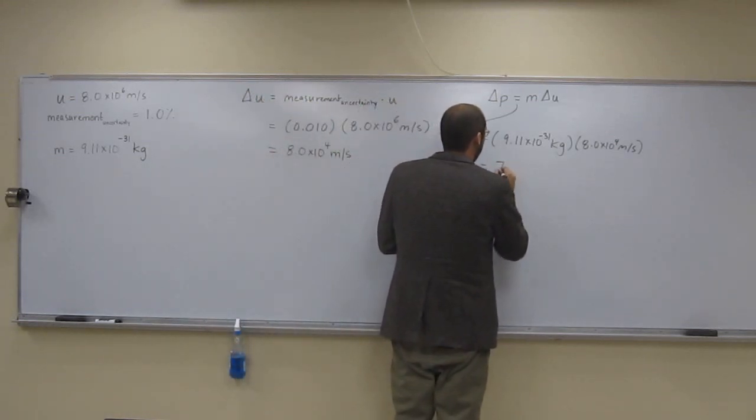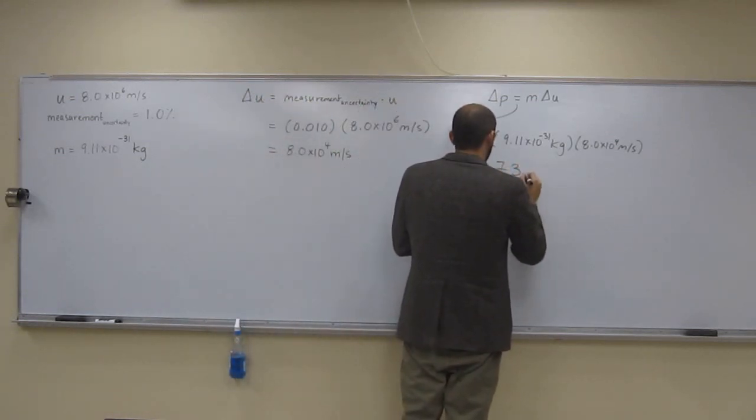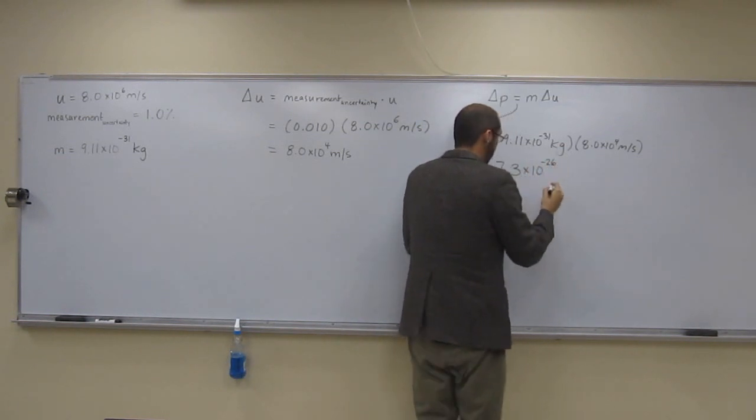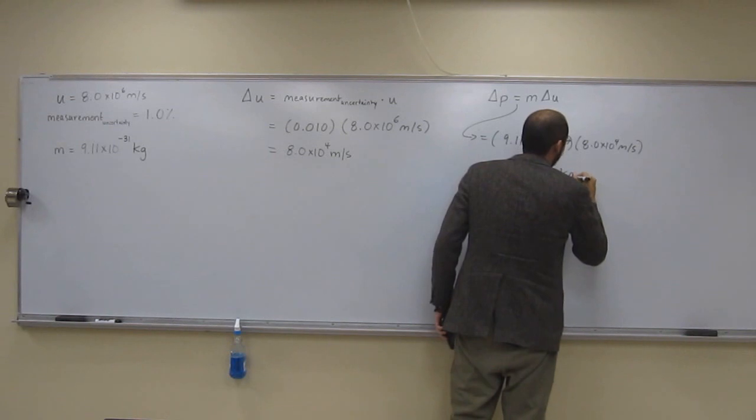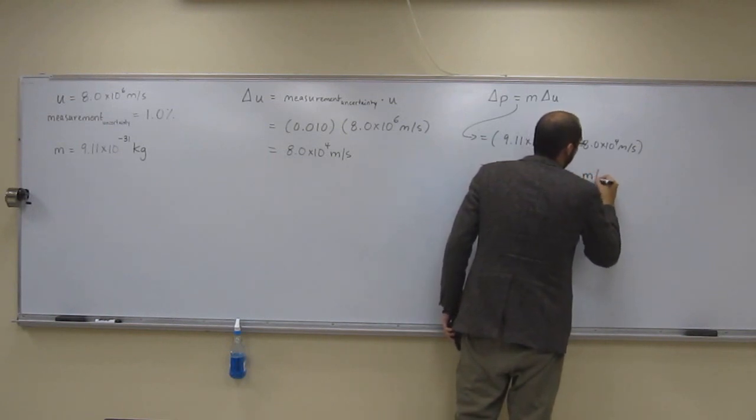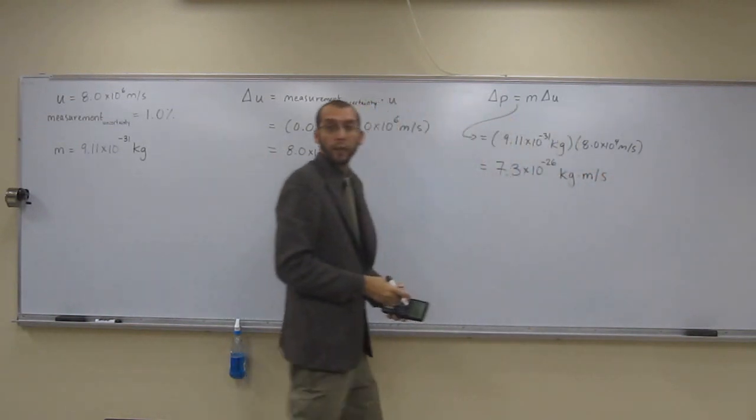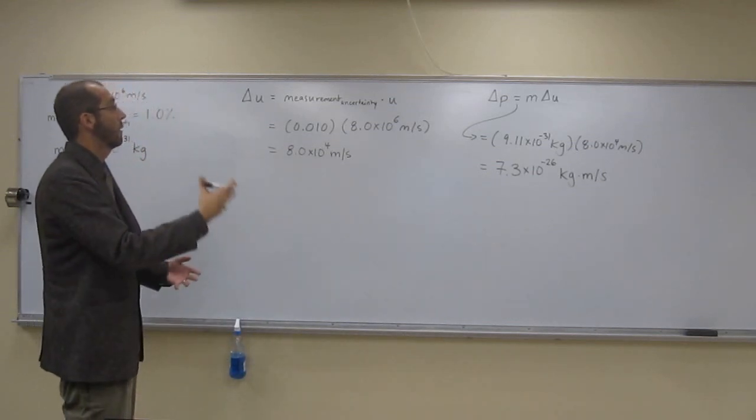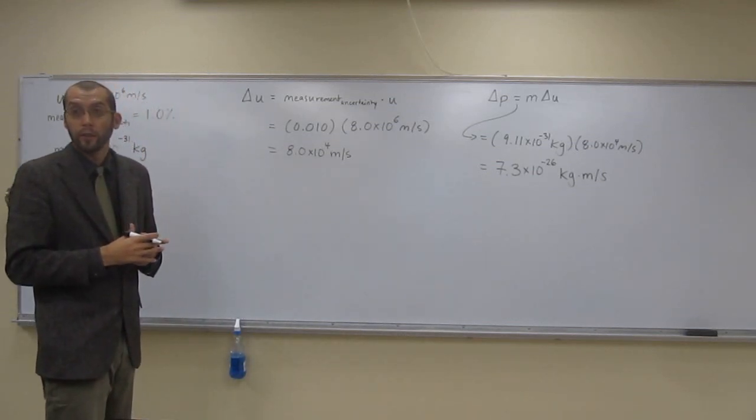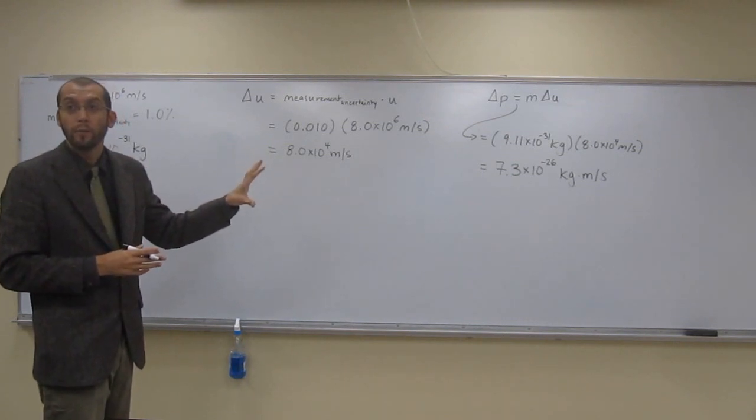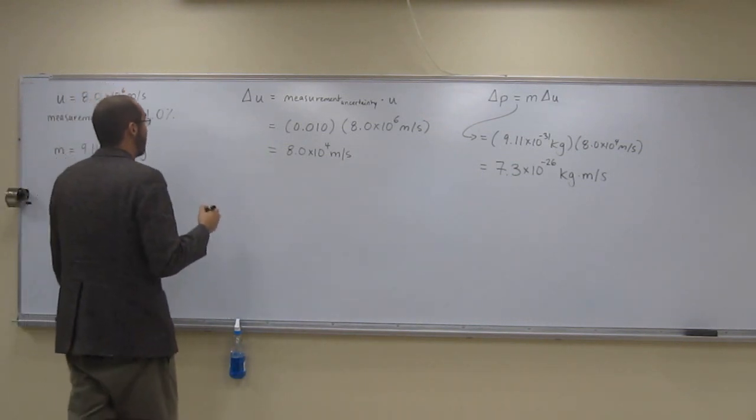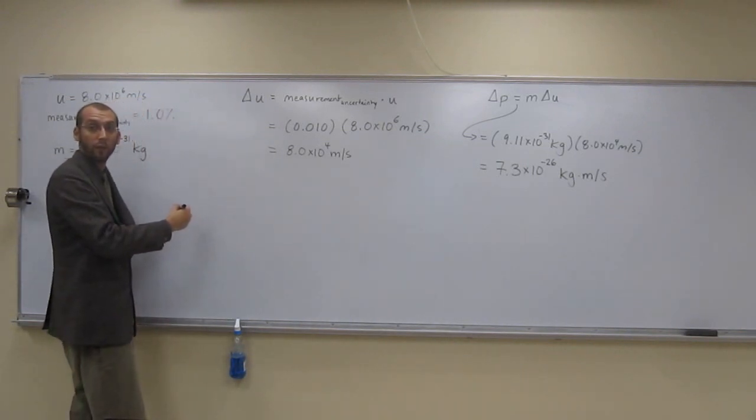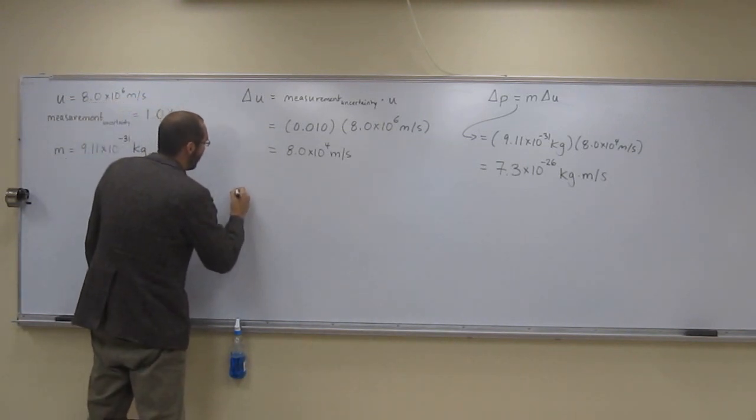So I get 7.3 times 10 to the negative 26th kilogram meter per second. So it wanted the uncertainty in the position of this electron though, not in its momentum. So how do we do the uncertainty in position? Well, that's another equation that we have to memorize.